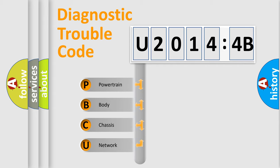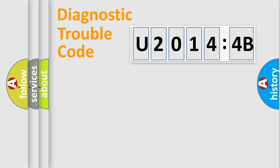We divide the electric system of automobiles into four basic units: Powertrain, Body, Chassis, and Network.